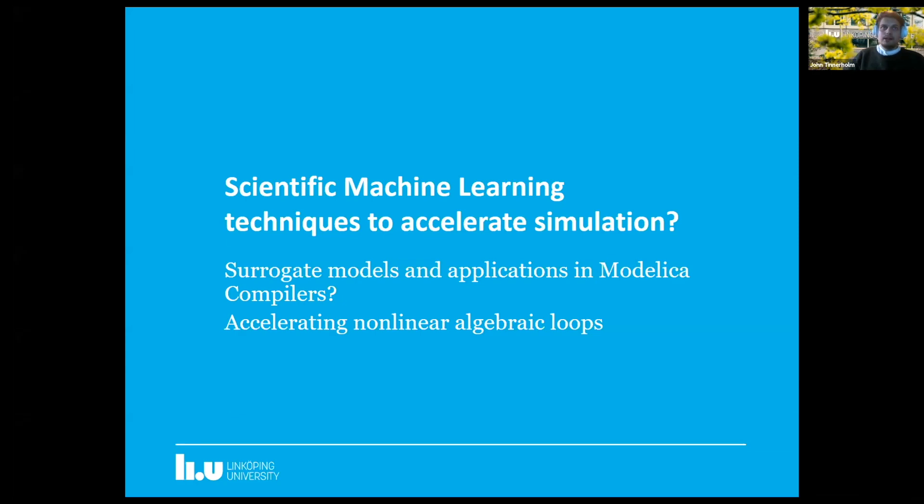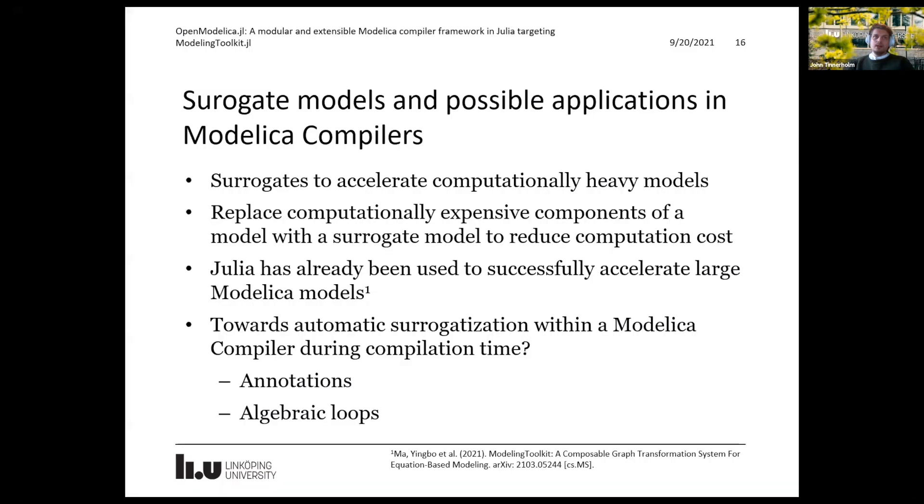So we also were interested in just checking, can we use scientific machine learning techniques to accelerate simulation? So in this next section, we will introduce possible direction for future work, and that is compile time acceleration within the Modelica compiler. We will also provide some examples on how a non-linear loop can be accelerated using neural networks to speed up simulation. The use of surrogates to accelerate computationally heavy models is not new. The idea is to replace computationally expensive components of a model with a surrogate model to reduce computation cost and consequently reduce the feedback loop for modelers. And we have seen several presentations concerning this today.